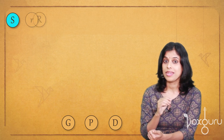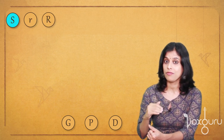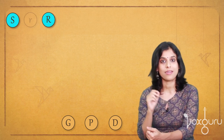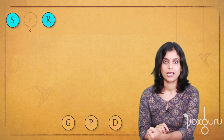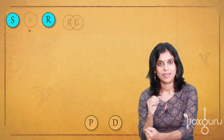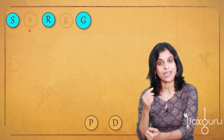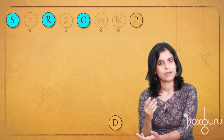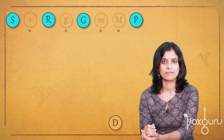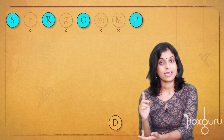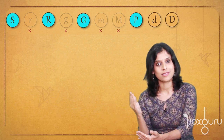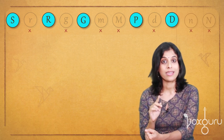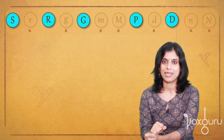Now which variant of Ri do we use in Mohanam — the lower variant or the higher variant? Mohanam uses the higher variant of Ri. Then we move on to Ga — again, Mohanam uses the higher variant of Ga. And then we go to Pa, which is a fixed swara. And finally we have Dha, which also uses the higher variant. So you must be familiar with which variant of each swara is being used in Mohanam.